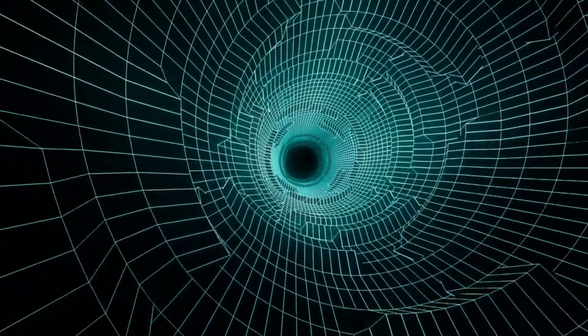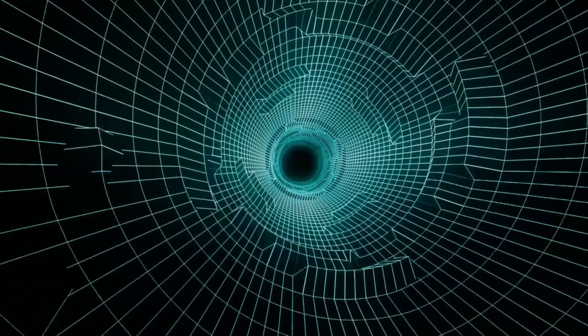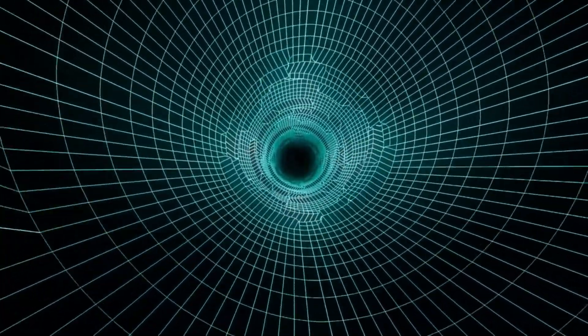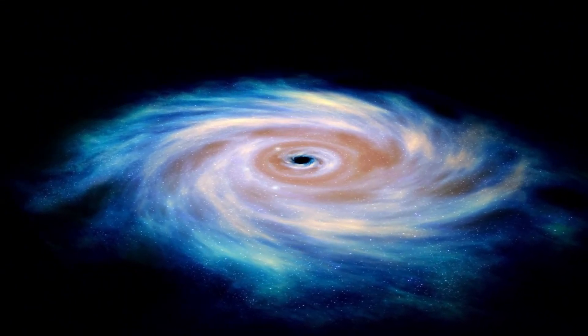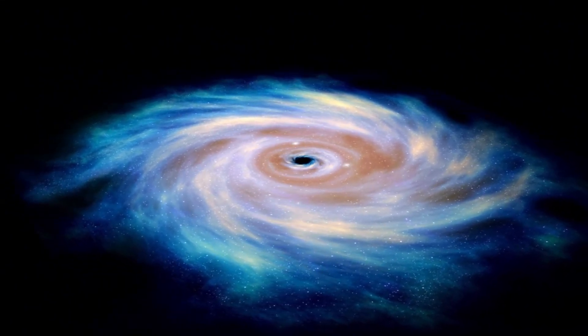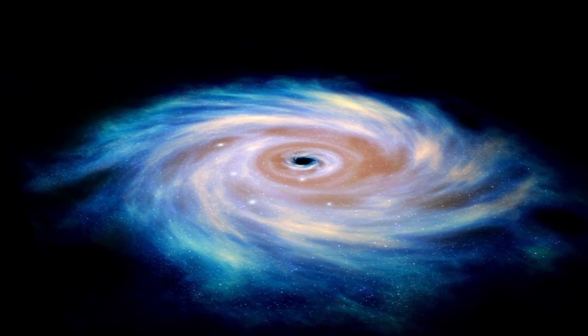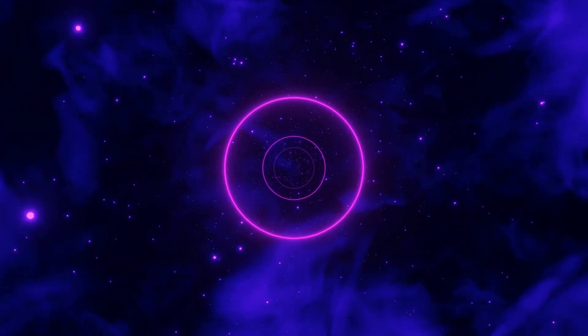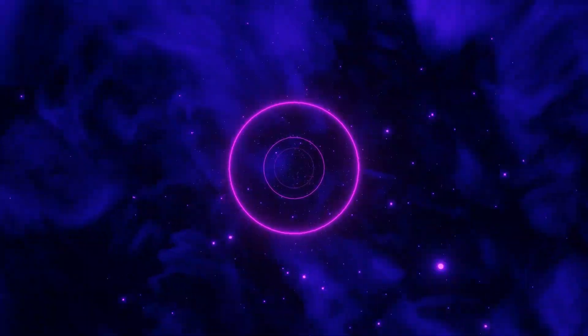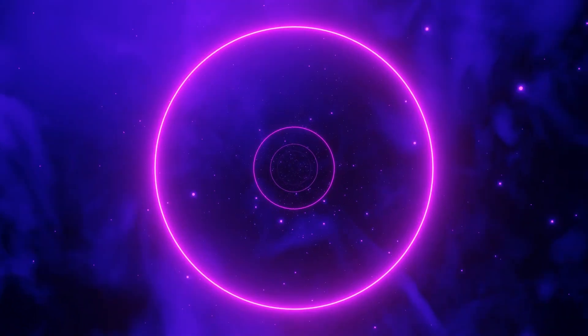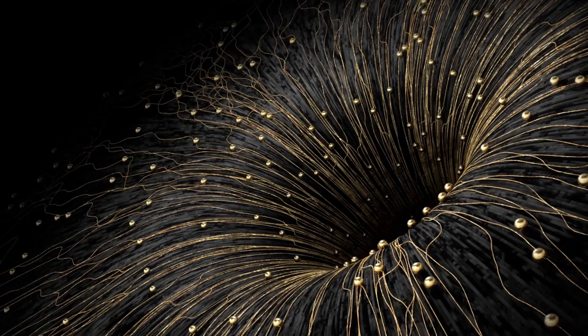Objects with mass warp this fabric, creating a gravitational field that causes other objects to move toward them. Picture spacetime as a sheet of paper. If you place two points on it and draw a line between them, that line represents the path objects take through spacetime. If you were able to fold the paper, you'd create a shortcut between the two points, much like a wormhole connecting two distant regions of spacetime.